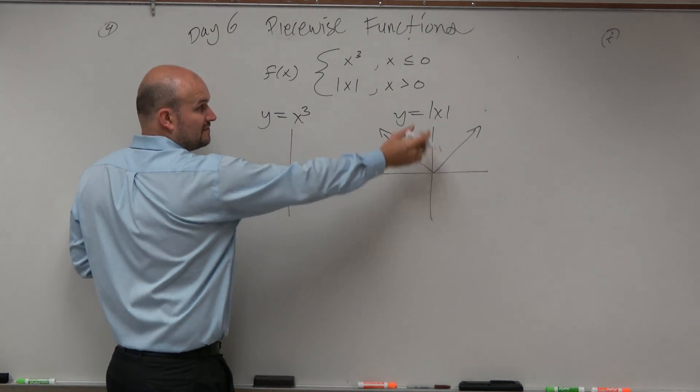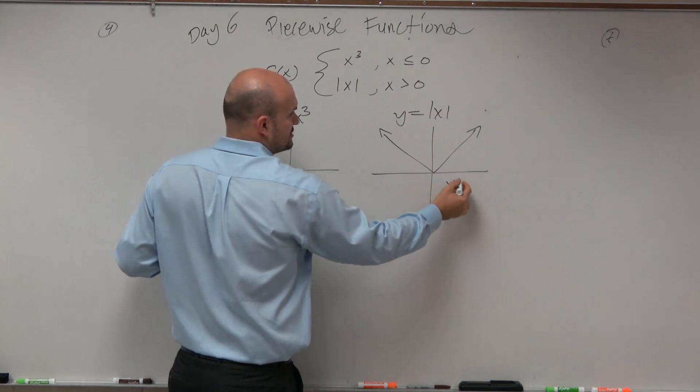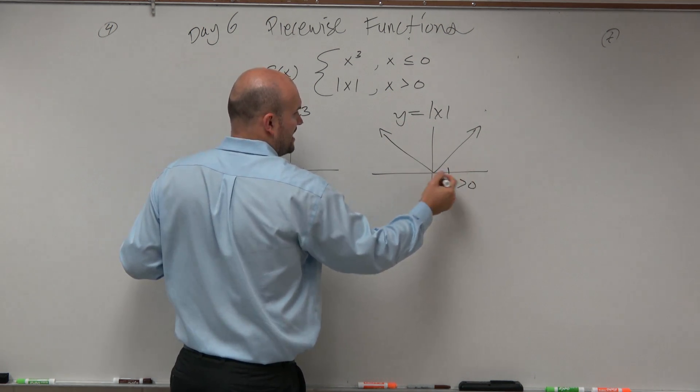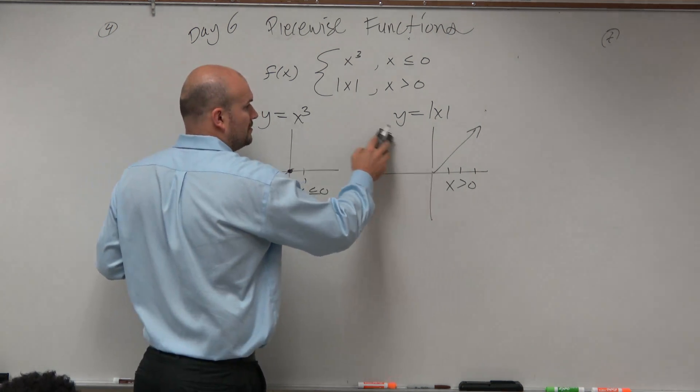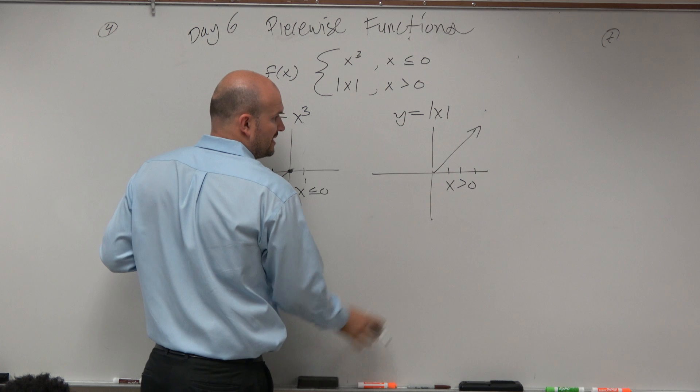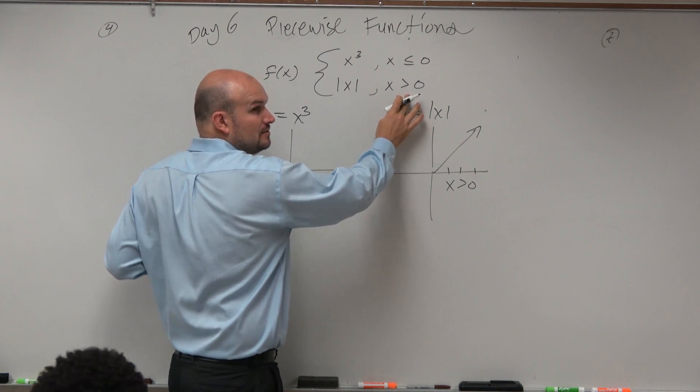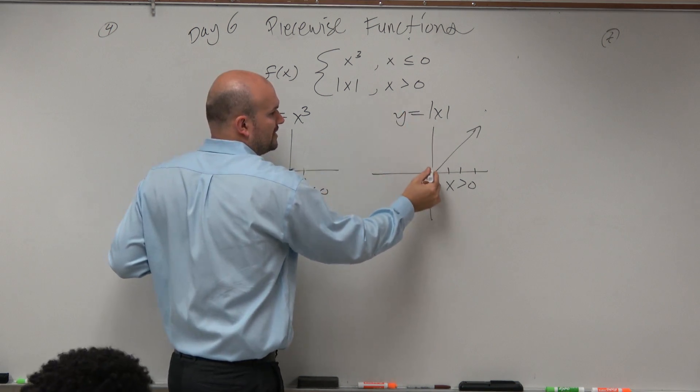Here, the absolute value graph. The domain is x greater than 0, so that's the positive values. Anything that's not greater than 0, we erase. But is it included at 0 or excluded? We've got to put a nice little hole there.